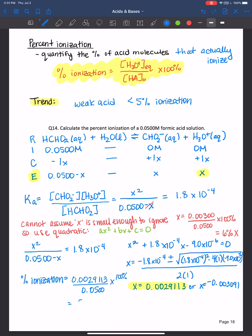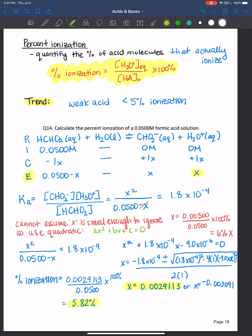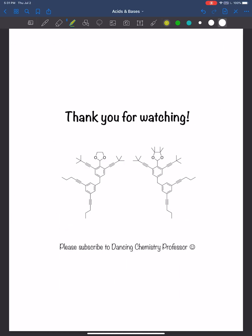And you get 5.82% ionization. So a little greater than the 5% ionization for typical weak acid, but we're working with a relatively dilute solution here of formic acid. Yeah, thank you all for watching and I will see you next time.